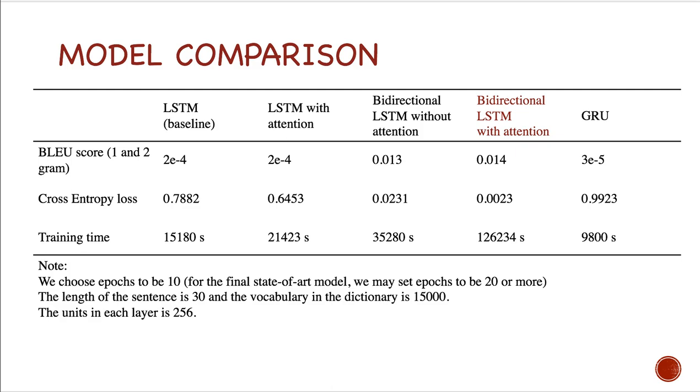And in this comparison, we choose the epochs to be 10, and the length of the sentence is 30, and the vocabulary in the dictionary is 15,000. The units in each layer is 256.